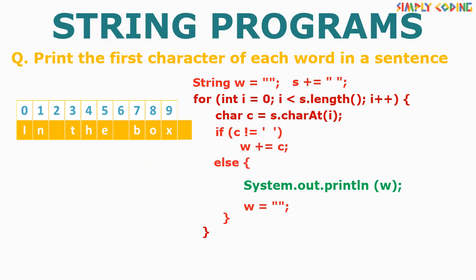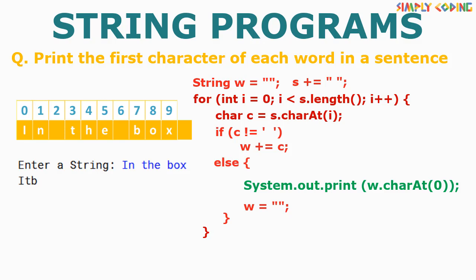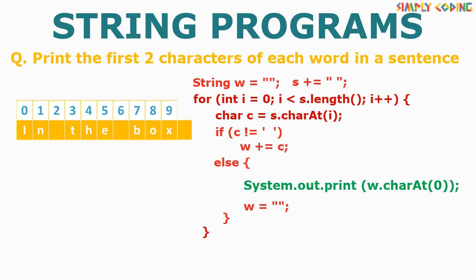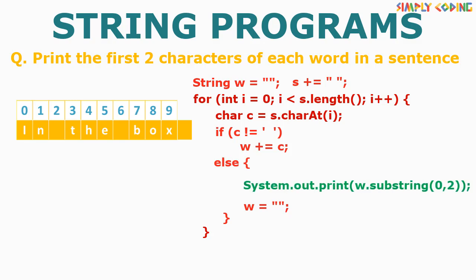What if the program is to print only the first character of each word? In that case, in the same template, we will extract the first character of the word by using charAt(0) and then we will print it. This will give you the first character of each word. Similarly, if the program is to print the first two characters of each word, in the print statement we can use the substring function to extract more characters. This program will extract the first two characters of each word and print it.